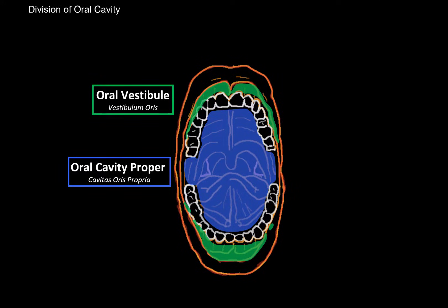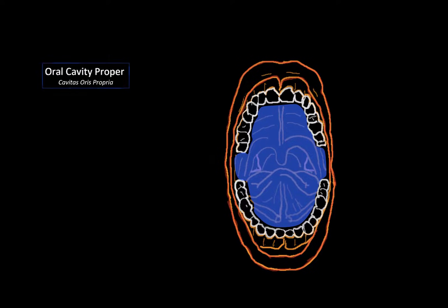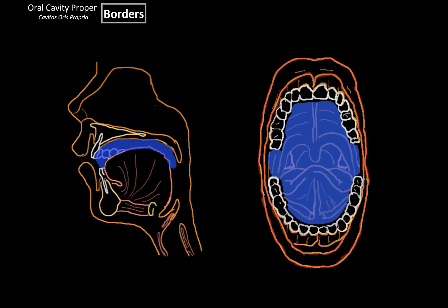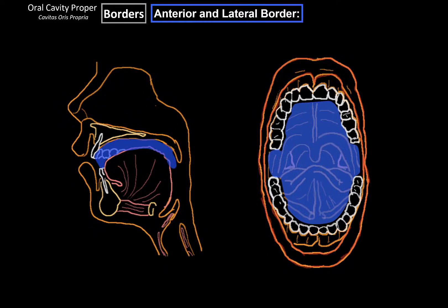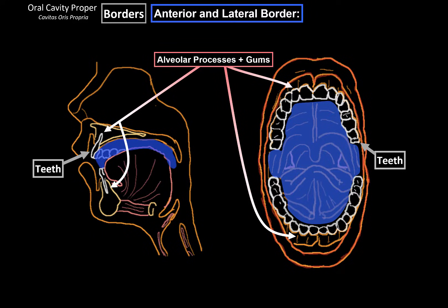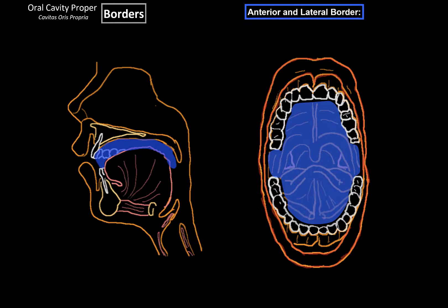To do that, we need to go through the borders of the oral cavity first. The anterior and lateral border consists of the alveolar process of the gums as well as the teeth. We already covered them in the last video, since the teeth and gums are also the internal borders of the oral vestibule.